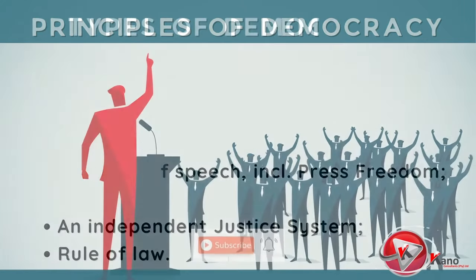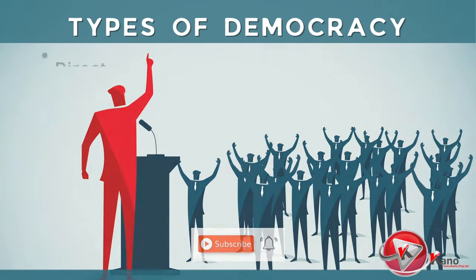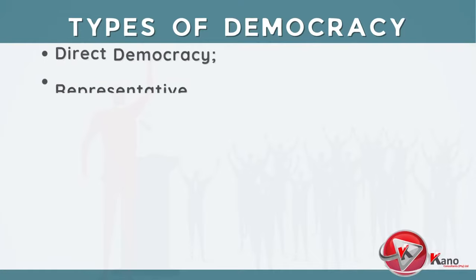There are a number of types of democracy being practiced around the world. Most academics usually categorize democracy under only two types, which are direct democracy and representative democracy.